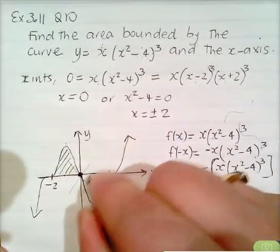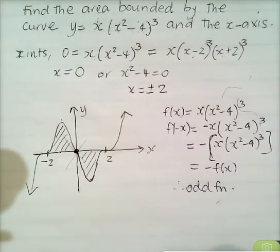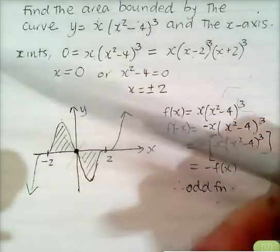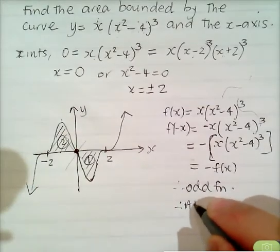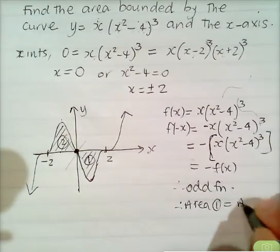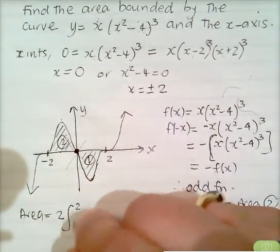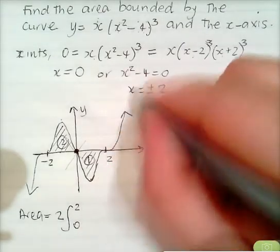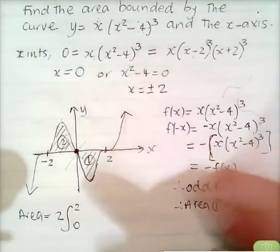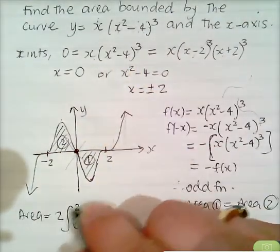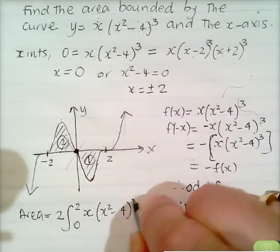Because it's an odd function, Area 1 equals Area 2 by symmetry. The curve extends to infinity beyond the outer roots, so there's no finite area outside those bounds. Therefore, the total area is 2 times the integral from 2 to 0 of x times x squared minus 4 cubed dx.